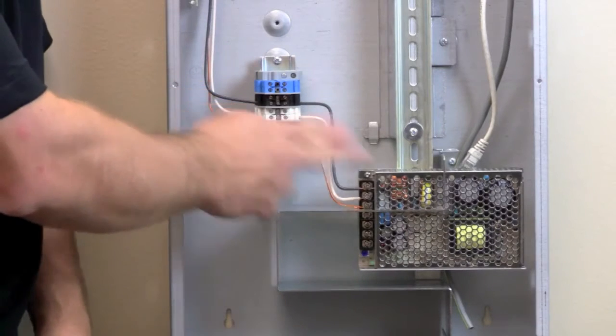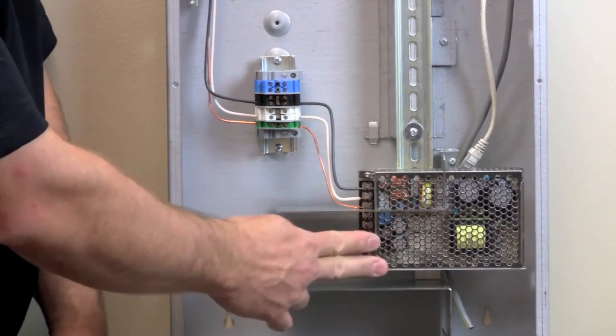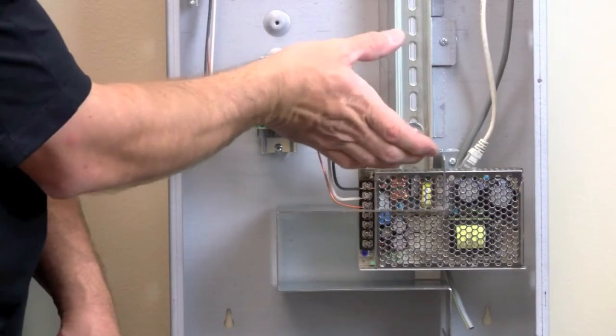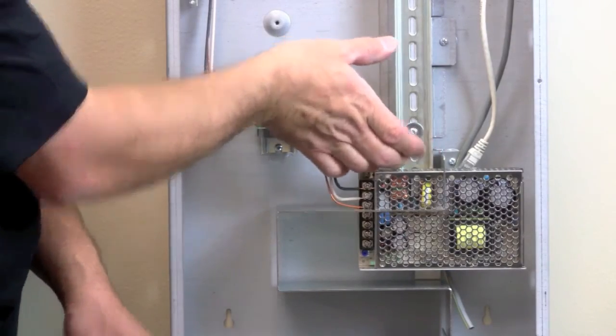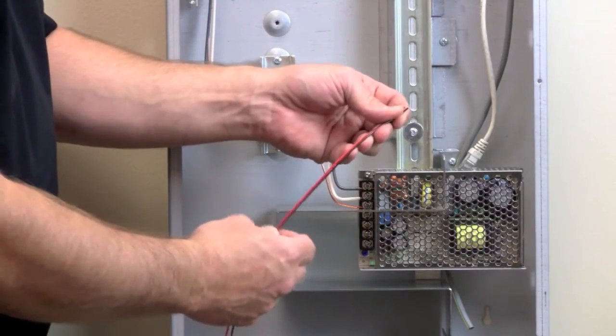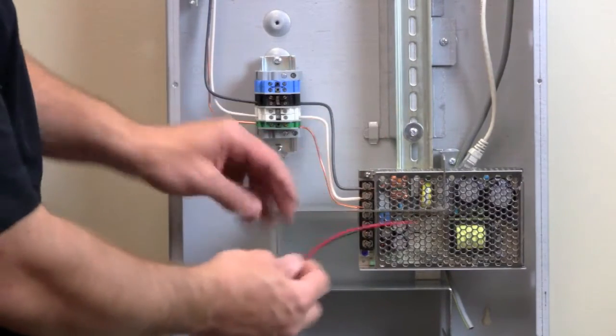Now that we have our power hooked up to the power supply, we need to get the output, the low voltage output of this power supply, to the bus ethernet gateway, which is going to sit right here in our can. So I simply just took a black and red out of the keypad wire, just some extra scrap I had laying around.